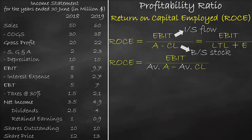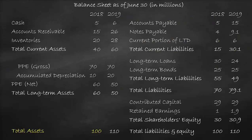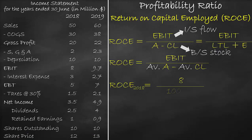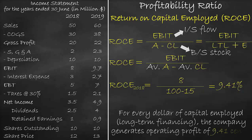Let's calculate ROCE for the year 2018. EBIT is equal to $8 million. Let's look at the balance sheet items for assets and current liabilities. Please note that 2018 is the first year of operations, so we do not have the average of assets and current liabilities because we do not have a previous year. We have assets in 2018 of $100 million and current liabilities in 2018 of $15 million. This equals 9.41%. For every dollar of capital employed, the company generates operating profit of 9.41 cents. For all profitability ratios, the higher the better.